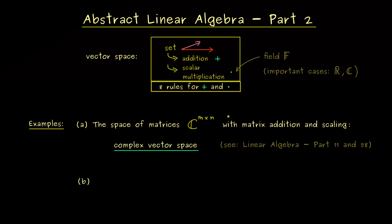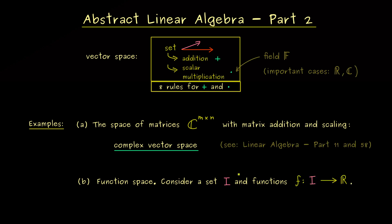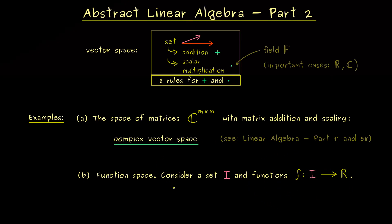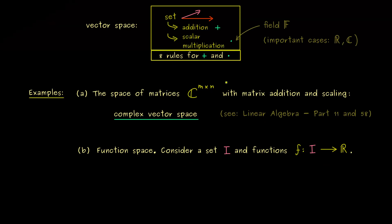This example with the matrices is still very concrete, so let's go to a more abstract one. This is one of the most important ones — it's a vector space consisting of functions. The domain of these functions is not so important, so we can fix any set I. Then we look at maps f that send this set I to the real number line, and we put all these maps into one set. We call this vector space curved F of I.